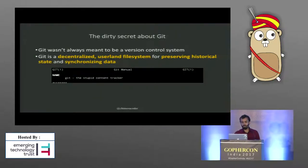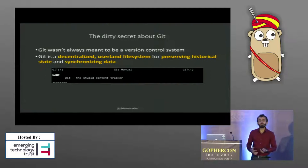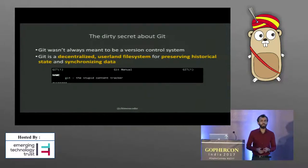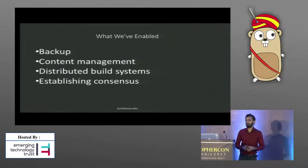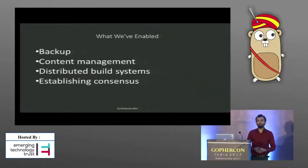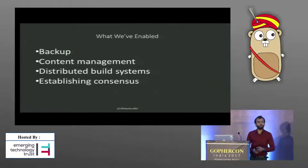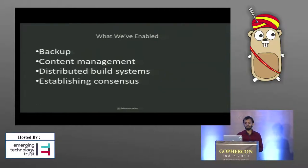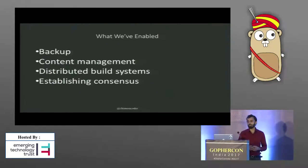When we talk about performing Git operations from Go source code, we can think of Git as a user-land file system — a decentralized user-land file system that can preserve historical data and synchronize state. We can use the Git file system for enabling a backup system or content management, create a distributed build system, have a lightweight protocol for establishing consensus, synchronize intermediate build states, and use binary diffs for performance. Some of these applications are already in use using GitGo.